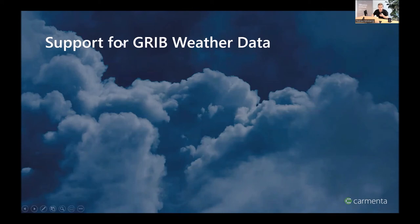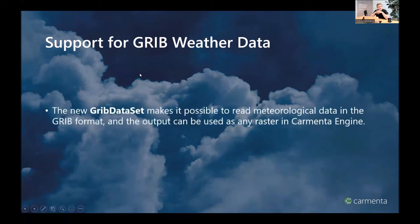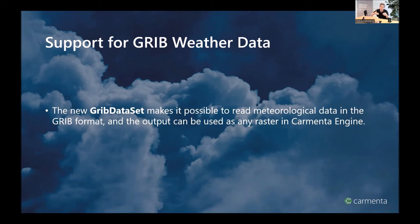We're already seeing customer interest in using our technology on board autonomous ground vehicles for terrain navigation using terrain routing — completely offline with local data sources, giving much more autonomy than continuous server connectivity. Another big new feature in 5.15 is native support for meteorological data in the form of GRIB data files. GRIB stands for Gridded Binary — a standard format for distributing multi-dimensional raster data such as weather forecasts, including time and elevation dimensions.